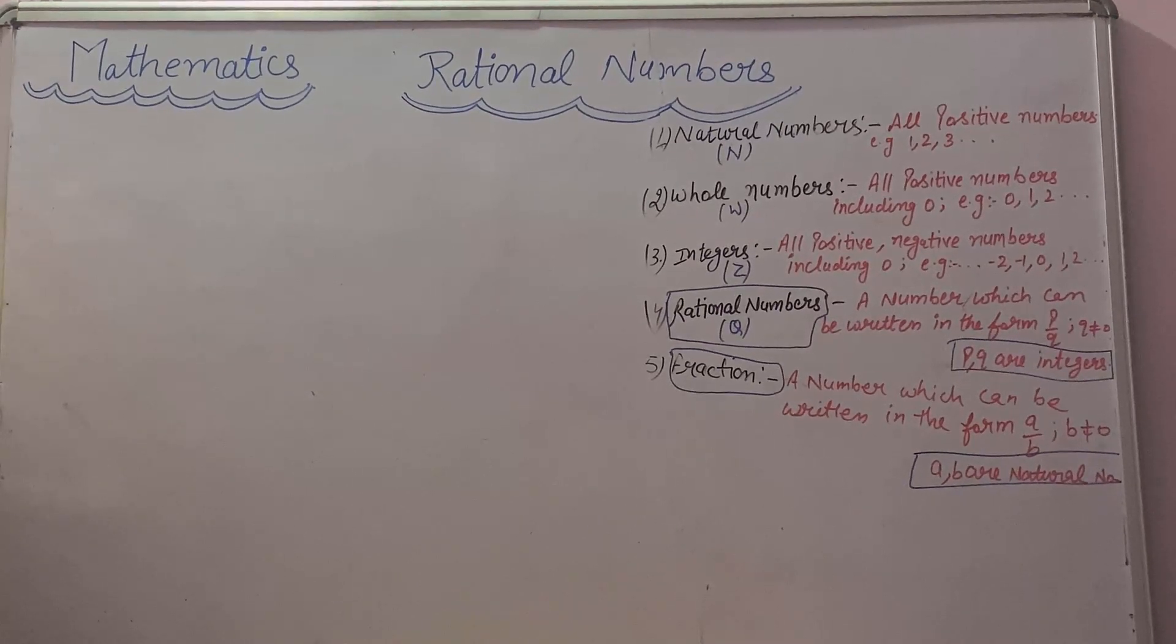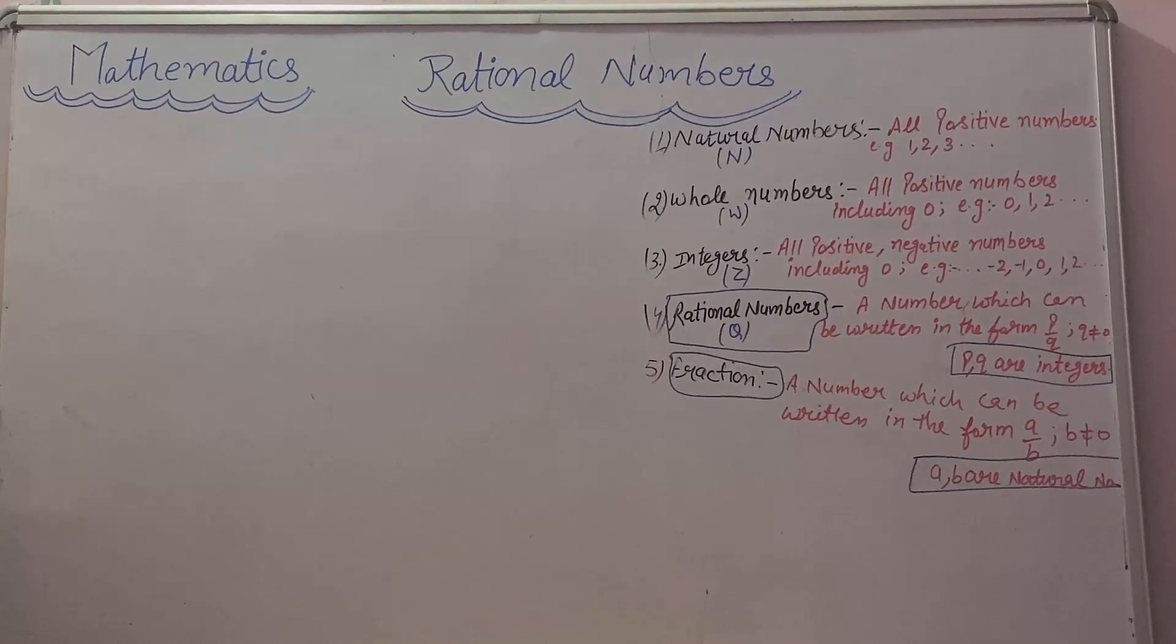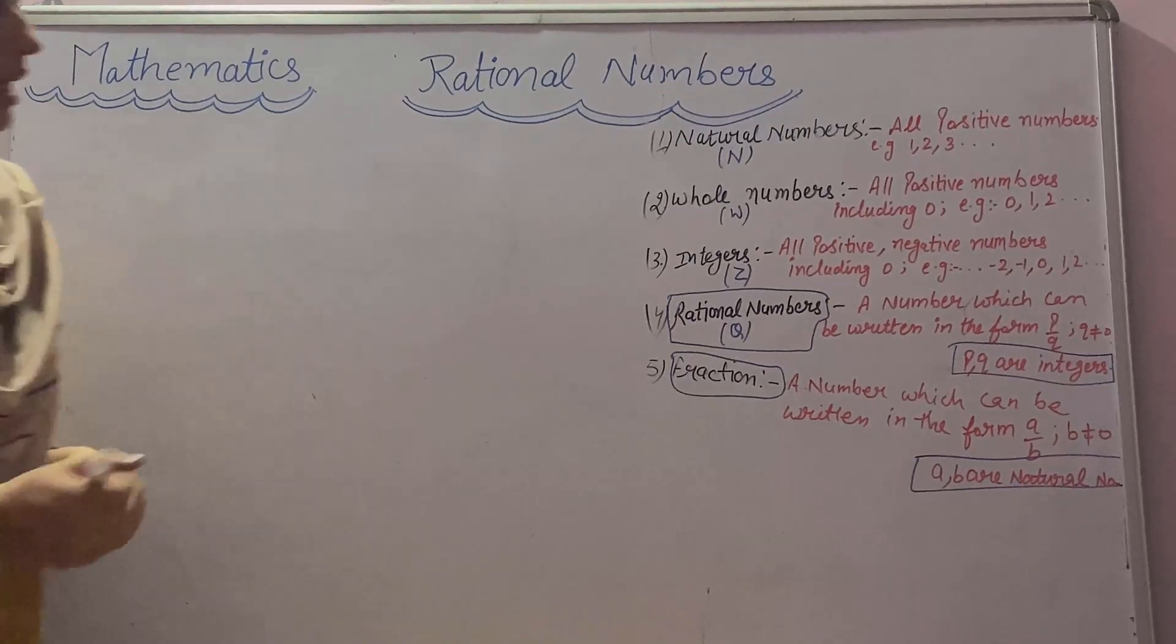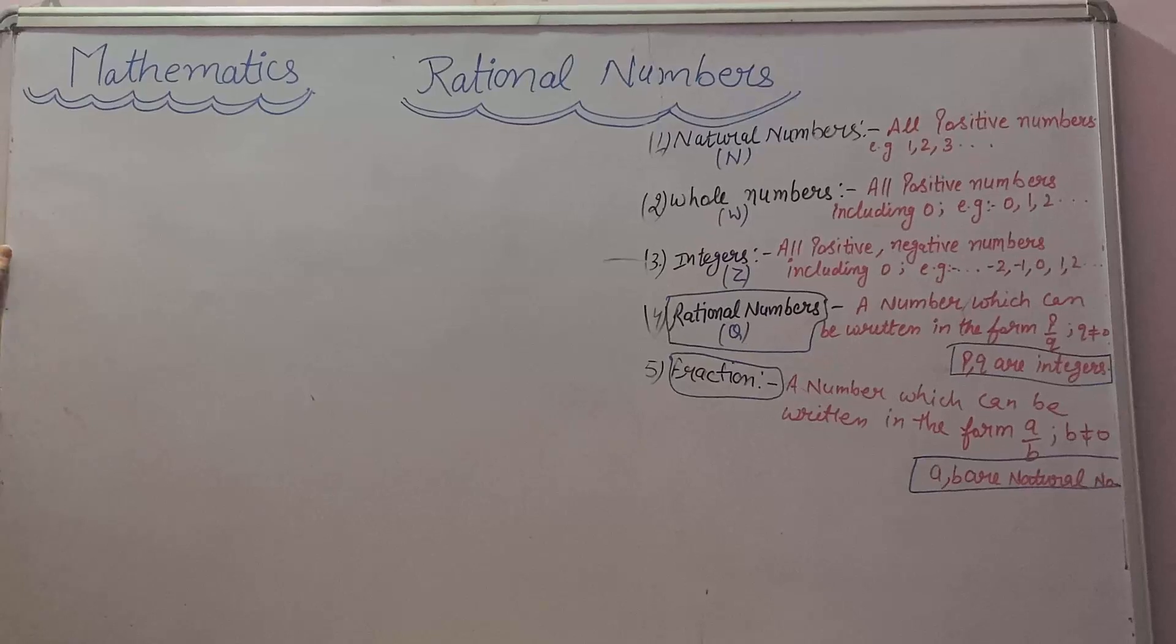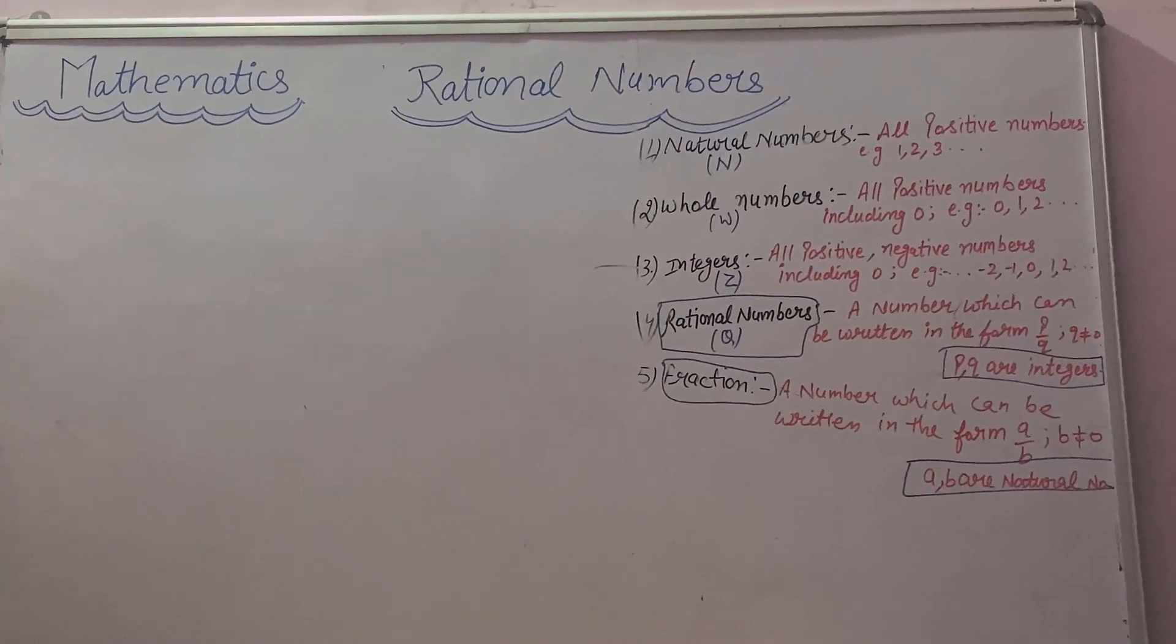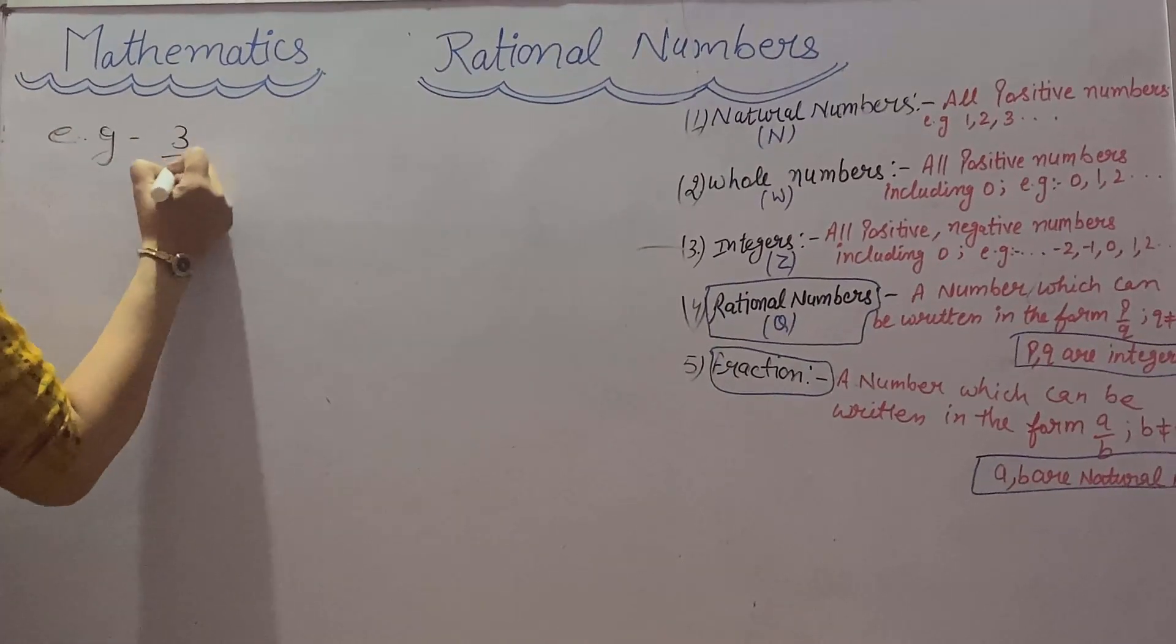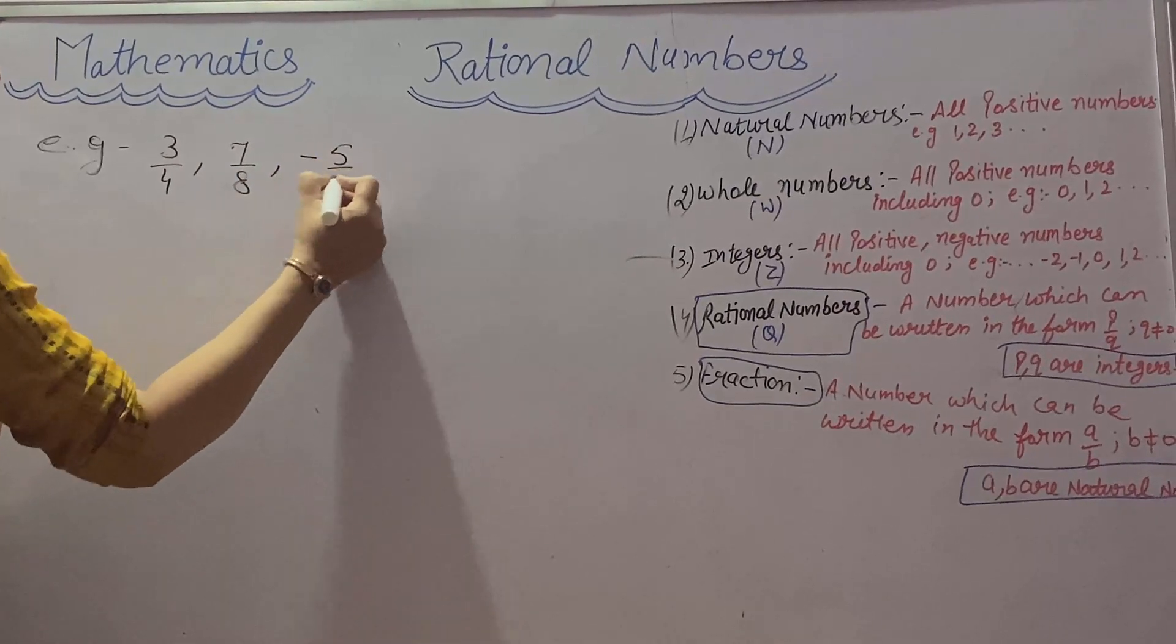Fourth one is rational numbers. A number which can be written in the form P by Q where Q is not equal to 0, and P, Q are integers are called rational numbers. We denote rational number by Q. For example, 3 by 4, 7 by 8, minus 5 by 7.